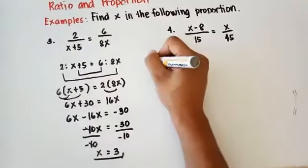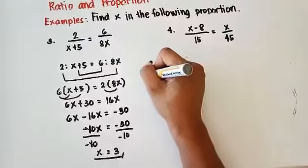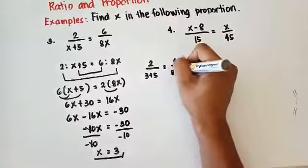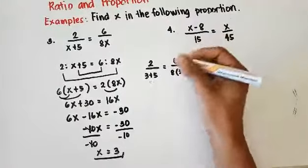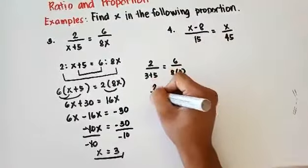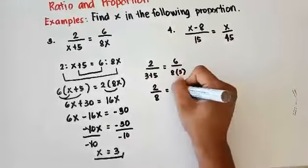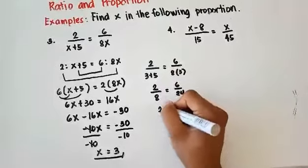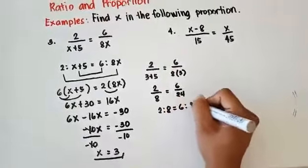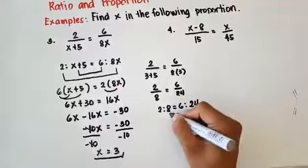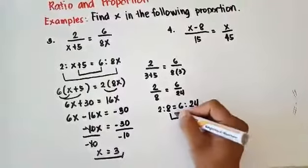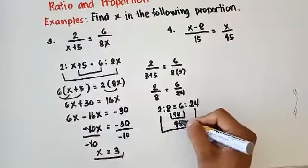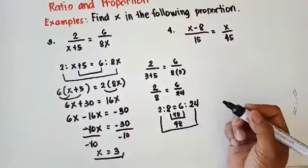Checking: 2 over (3 plus 5) equals 6 over (8 times 3). That is 2 over 8 equals 6 over 24. So 2 is to 8 is equal to 6 is to 24. Multiply 8 times 6 — that is 48. Then 2 times 24 is also 48. Therefore, our x is positive 3.